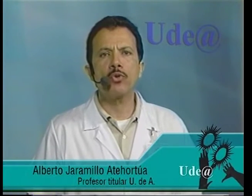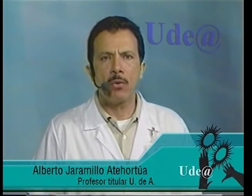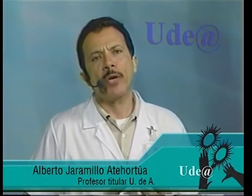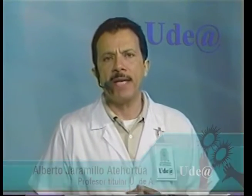Bienvenidos a U de Arroba, un programa de la Universidad de Antioquia. Continuamos con nuestro curso de Geometría Vectorial y Analítica, con el módulo 2, su segunda parte. Ya nosotros habíamos presentado la estructura básica de Rn como un espacio vectorial con sus dos operaciones básicas: una adición y una ley de composición externa.